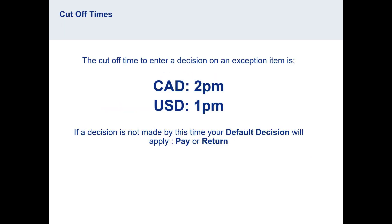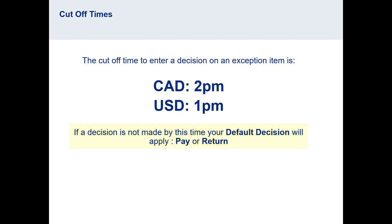The cutoff time to make a decision on an exception depends on the currency. For Canadian items, it's 2 p.m. For U.S. dollar items, it's 1 p.m. Your profile has been set up with a default decision, where if a decision is not made by the cutoff time, then the default decision will apply. If you are unsure of your default decision, check with your RBC representative.